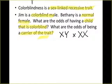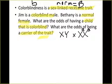Colorblindness is lowercase B because it's recessive, and normal vision is uppercase B. We have a normal female, so she is X^B X^B — homozygous dominant. The colorblind male is X^b Y — notice there is no allele on the Y because these are X-linked traits. Now we cross them just like any other Punnett square.